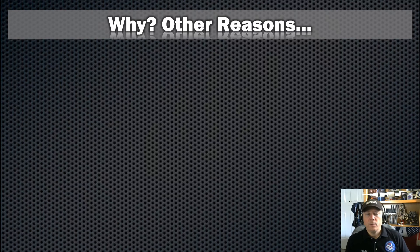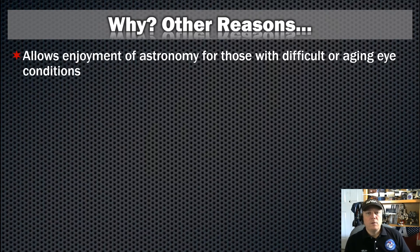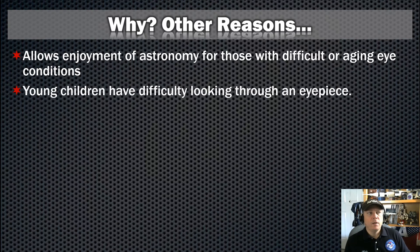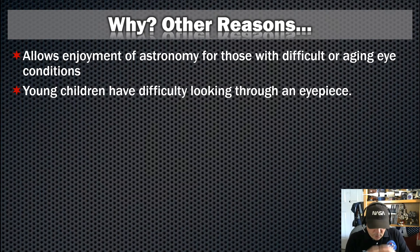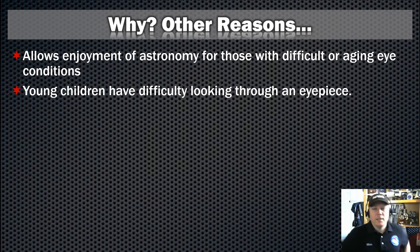What are some other reasons why we might choose to do EAA? Well, for those who may have any sort of eye conditions or physical disabilities and are not able to actually get up and stand and get their eye onto an eyepiece, EAA allows access to views from a telescope. Additionally, young children have difficulty looking through the eyepiece — they often wind up getting the eyepiece right smack dab in the middle of their forehead instead of their eye.